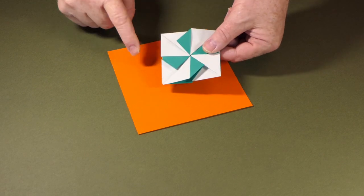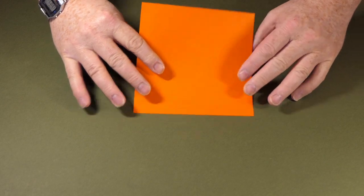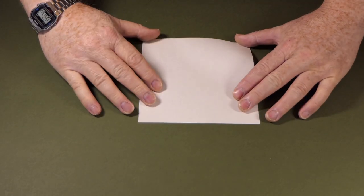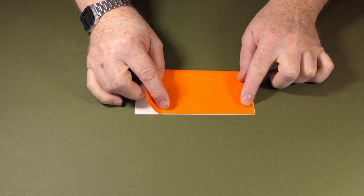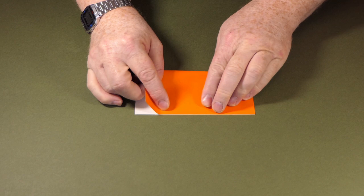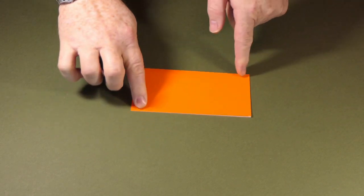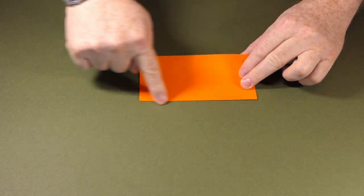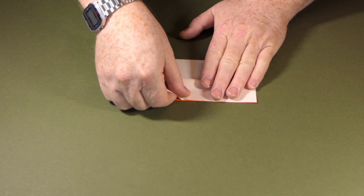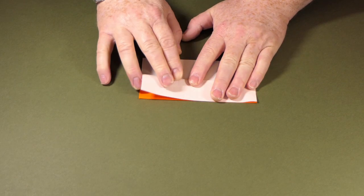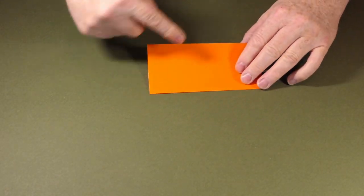So here we go, I'm going to fold one of these into the quilt module. White side up, I'm folding in half. Okay, I'm going to turn that round and I'm going to fold a raw edge to that creased edge. If I turn the paper over I'll fold the other raw edge.